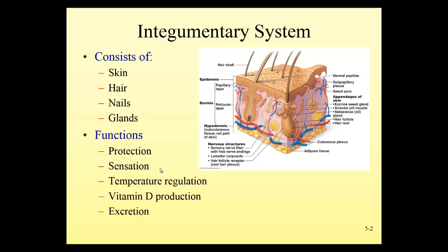Vitamin D production occurs in the skin. It starts in the skin and then the rest of that vitamin D has to be further processed by both the liver and the kidneys before it's finally able to be used in the small intestine to help us absorb calcium. So it's important that you understand vitamin D is produced in the skin in the presence of ultraviolet rays, but it needs further processing before it can be used in the small intestine to help us absorb calcium. So vitamin D is important for calcium absorption.